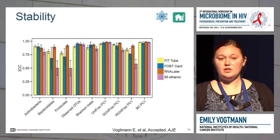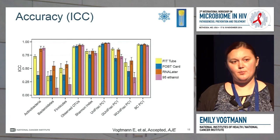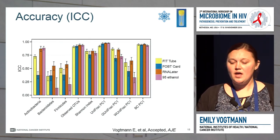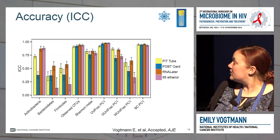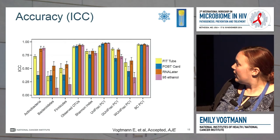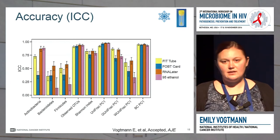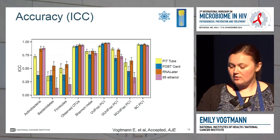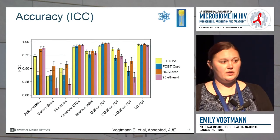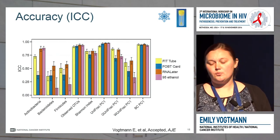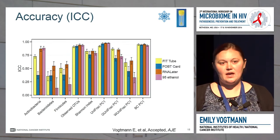In general, all of these methods appear fairly stable, which is comforting if you're going to collect samples and want to leave them at room temperature for a short time before getting them to a clinic or freezer. When we look at accuracy — comparing each sample collection method to the immediately frozen fecal sample — the ICCs got a little bit lower, especially for the relative abundances and weighted UniFrac. This suggests that each method is slightly different from the immediately frozen fecal sample, which means in any study you want to collect samples in the same way. If you observe differences, it could be related to collection method versus actual biological differences.